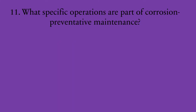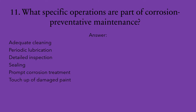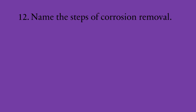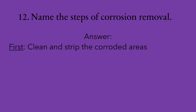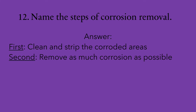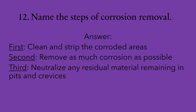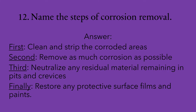Number eleven: what specific operations are part of corrosion preventive maintenance? The operations include adequate cleaning, periodic lubrication, detailed inspection, sealing, prompt corrosion treatment, touch-up of damaged paint, the use of protective covers, and the daily wipe-down of exposed critical areas. Number twelve: name the steps of corrosion removal. First, clean and strip the corroded areas. Second, remove as much corrosion as possible. Third, neutralize any residual material remaining in the pits and crevices. And finally, restore any protective surface films and paints.